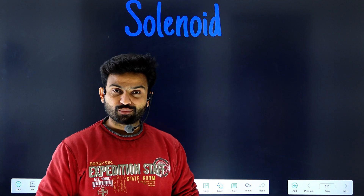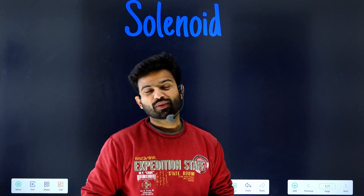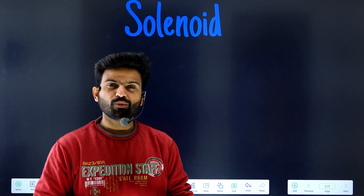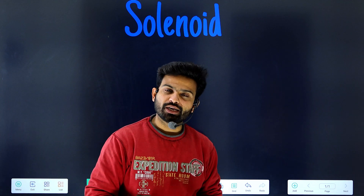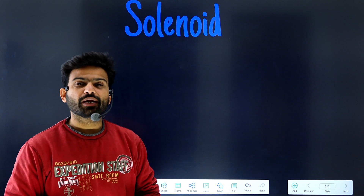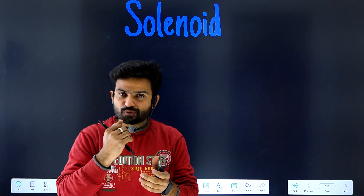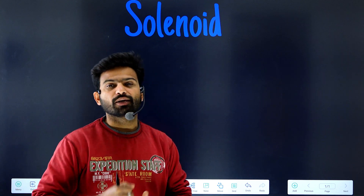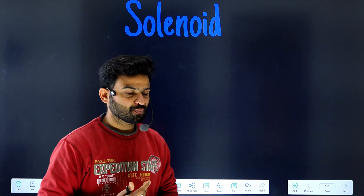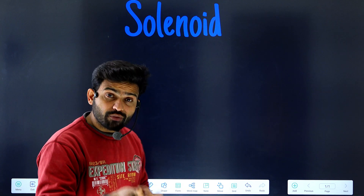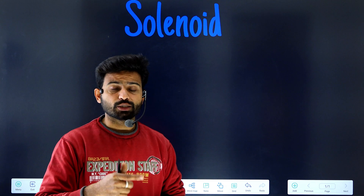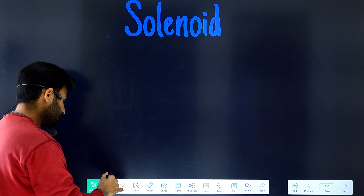Hello and a very warm welcome to all of you. We know that most students have problems finding out the direction of the magnetic field in a solenoid. So now we are going to find out the direction of the magnetic field in a solenoid using the right-hand thumb rule. It's a very easy and simple way.